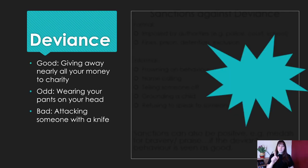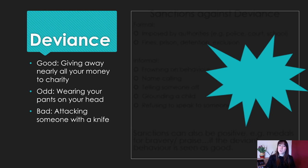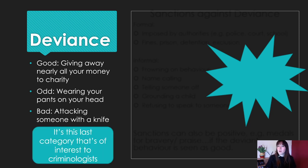Deviants in a bit more detail. Deviants can be good, odd, or bad. Good: giving away nearly all your money to charity — that's not something people do very often, so it's out of the norm, but it's a good out of the norm. Odd: wearing your pants on your head, or walking around with no top on during winter. These things are odd and deviant because they're against the norm. Bad: attacking someone with a knife — something that is deviant and bad is when it might hurt somebody. And obviously, criminologists — that's us — we're interested in the last one. We're interested in the bad deviance.